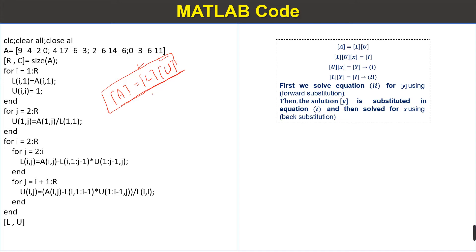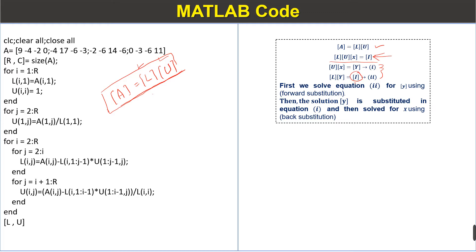First we decompose the coefficient matrix, and then we have two equations to solve. We can see that in those equations we have an identity matrix. So in this code, first we create the identity matrix of the same order as the coefficient matrix.